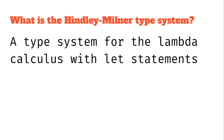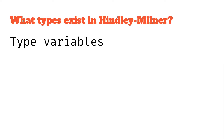So what are those building blocks in the Hindley-Milner type system? First, there are type variables. Similar to expression variables, they're basically a placeholder for something else. So we might have alpha or beta, and these could be anything — they could be int, or a function from integer to bool, or all kinds of different things. It's a symbol that represents a type under the hood.